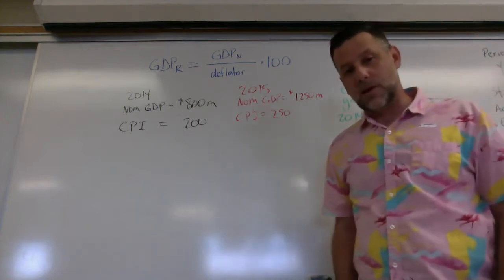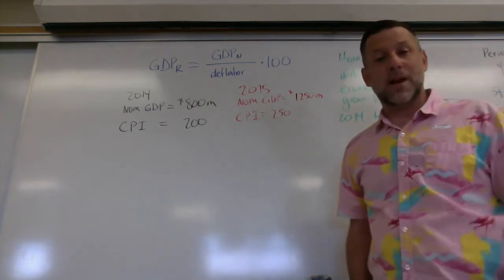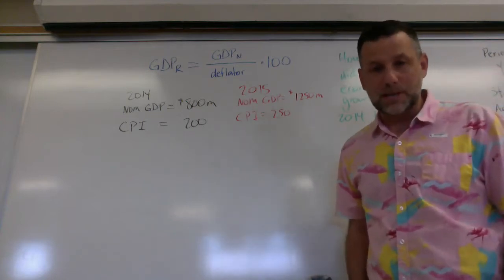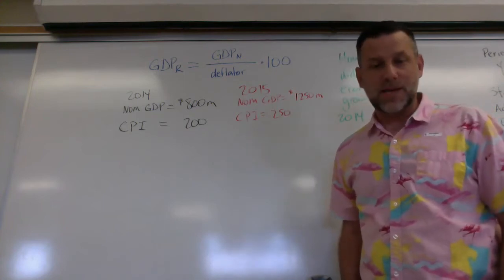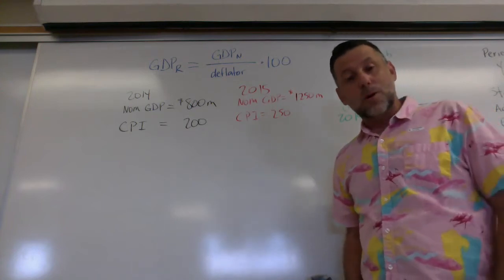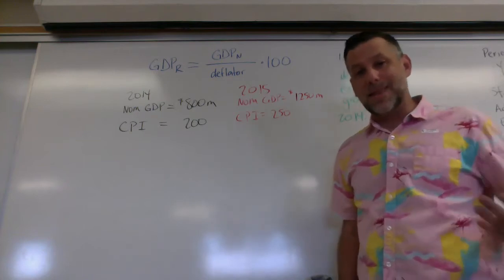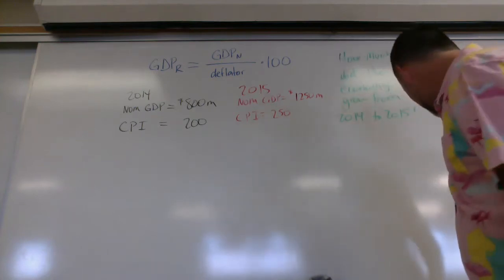So we're going to have to do two things here. The first thing we're going to have to do is we're going to have to figure out the real GDPs for 2014 and 2015. And then once we have those real GDPs, we're going to plug them into our growth formula, and that's going to tell us how much the economy actually grew.